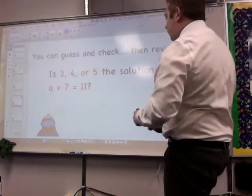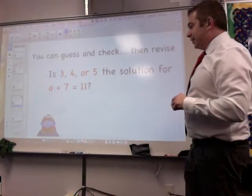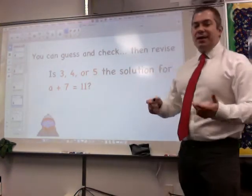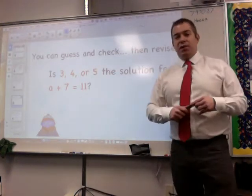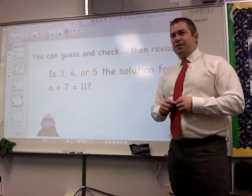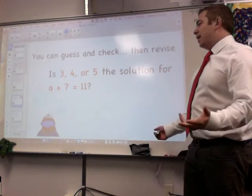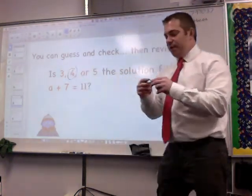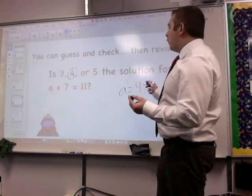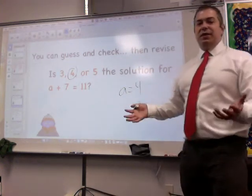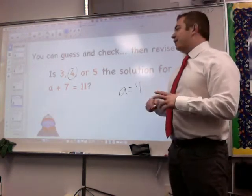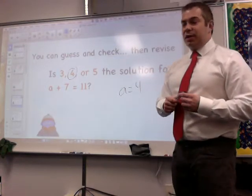I haven't shown you any strategies yet. Let's start off with the guess and check strategy, then revise. So if I see a plus 7 equals 11, I'm going to guess a number that makes sense. I'm not going to guess 45 because 45 plus 7 is obviously over 11. But 3, 4, or 5, let me start off with 3. 7 plus 3 is 7, 8, 9, 10. That's not right. It's only 1 away, so it must mean 4. Let me try 4 now. 7, 8, 9, 10, 11. So a must equal 4 because 4 plus 7 is 11. These are easier numbers, but I'm just showing you that you can guess, check your answer, and I had to revise when I guessed 3. It was a good guess but it wasn't exactly right.